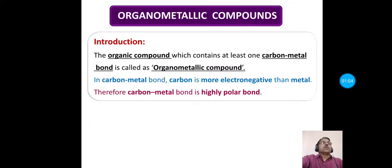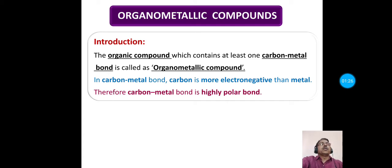First of all, what are organometallic compounds? Organometallic compounds are those compounds in which at least one carbon-metal bond is present. These are the organic compounds containing at least one carbon-metal bond in their molecule.